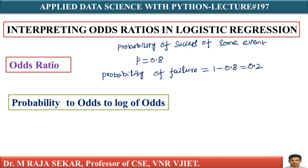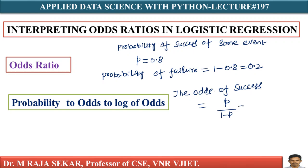The odds of success are defined as the ratio of the probability of success to the probability of failure, that is P divided by 1 minus P. So 0.8 divided by 0.2 equals 4.